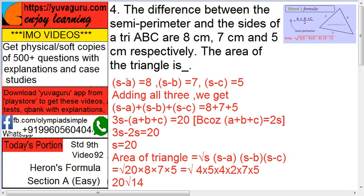So, it is given that the difference is this. Means S - suppose S is the semi-perimeter in Heron's formula and ABC are the sides. So, S minus A equals 8, S minus B equals 7, S minus C equals 5.